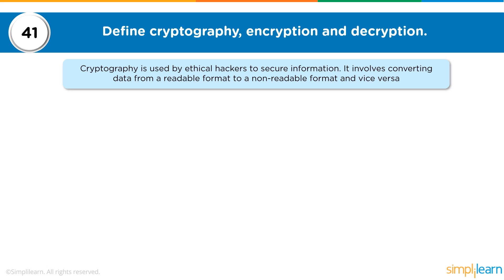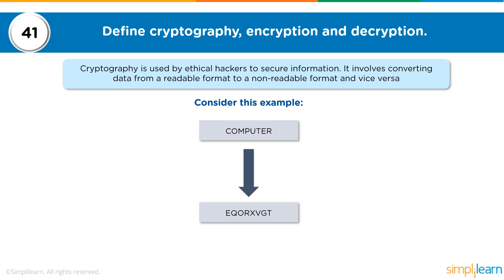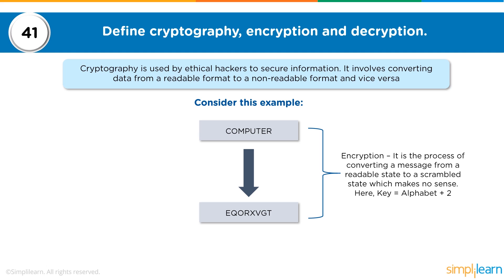The first question: define cryptography, encryption and decryption. Cryptography is used by security professionals to scramble data into a non-readable format, which is used in securing that information. It involves converting data from a readable format into a non-readable format and then reversing it back to readable format again. For example, the word 'computer' is now scrambled into looking like an unreadable format.